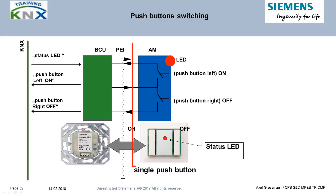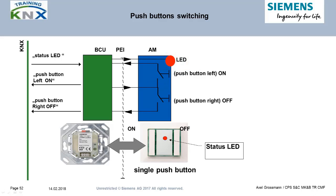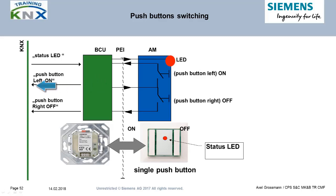Starting from the right side: we have the application module with two push buttons and one LED. When you press one of the buttons, you close an electrical contact and change the voltage on one of the signal pins on the PEI. The bus coupler registers this change and starts the program routine assigned to it. If the right button is pressed, a telegram with the user signal value of 1 is sent to the bus; with the left button, the opposite value 0. You will also learn in detail how the complete telegram looks.